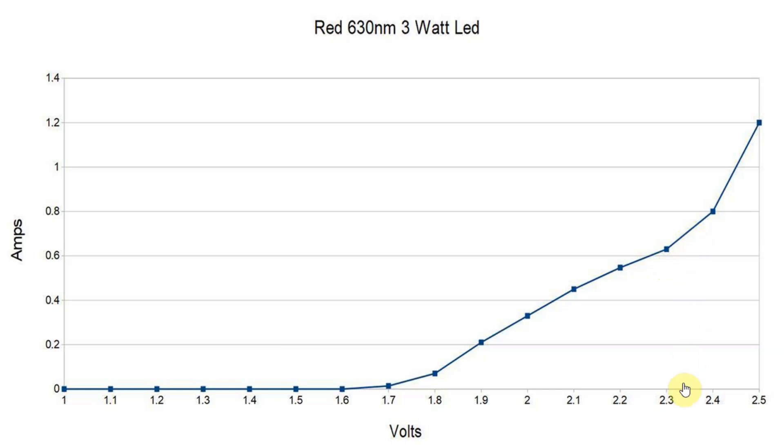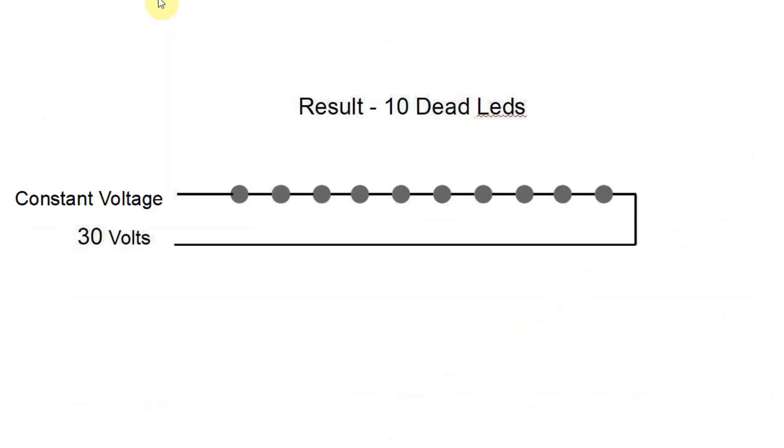Going just 0.1 volt higher and your current's gone up to 1 amp, 1,000 milliamps and the LED would blow. So putting it up by 0.3 of a volt is going to result in 10 very dead LEDs. That's with a constant voltage power supply.